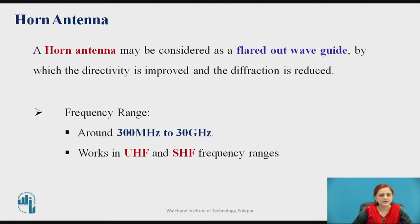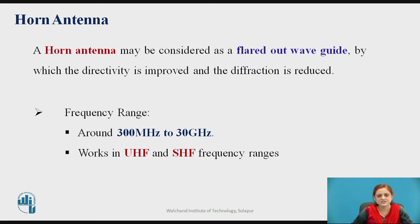A horn antenna may be considered as a flared-out waveguide by which the directivity is improved and the diffraction is reduced. The frequency range for the horn antenna is around 300 MHz to 30 GHz, working in the ultra high frequency to super high frequency range.